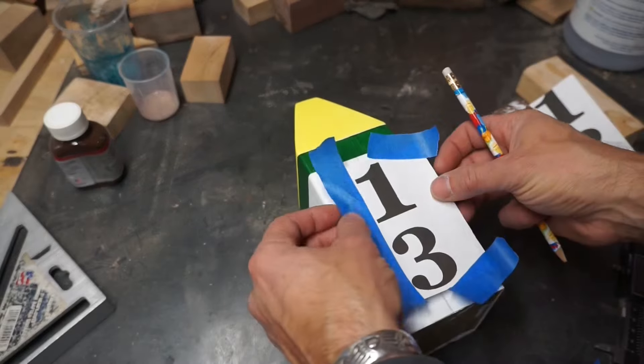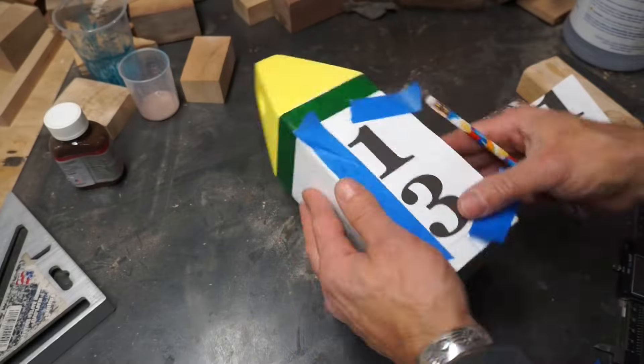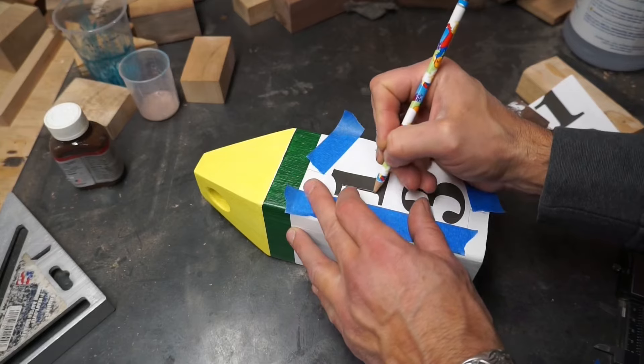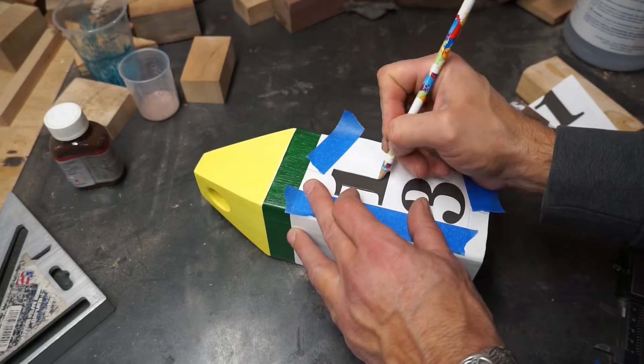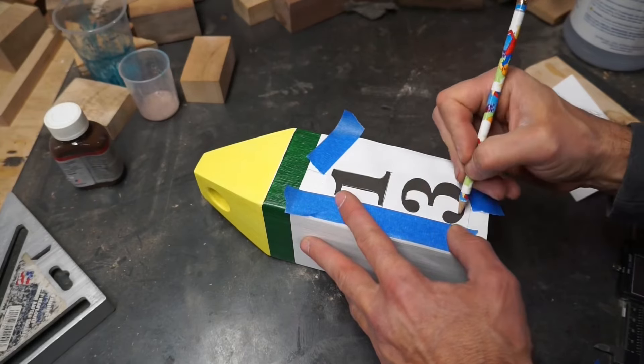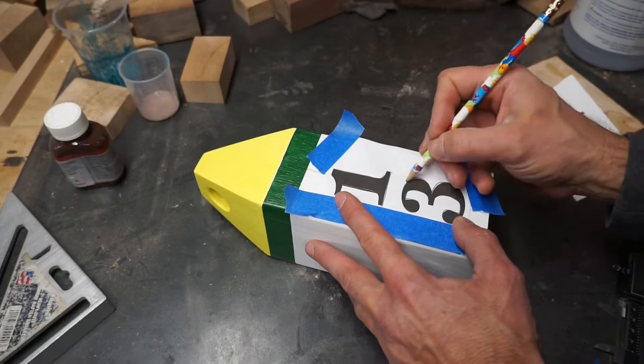For the number part, I ended up printing off numbers in a font that I liked, and then I used a graphite pencil to put pencil marks all behind the numbers. That way, I'm going to trace the outline of the numbers here, and it's going to leave an impression under the paper when I take it off. And then I'm going to use a Sharpie to fill it in.